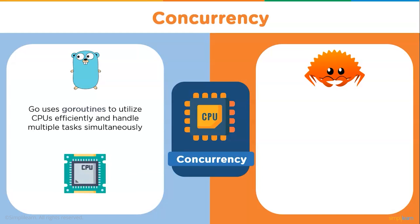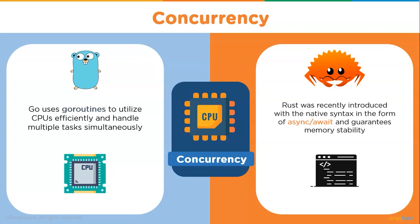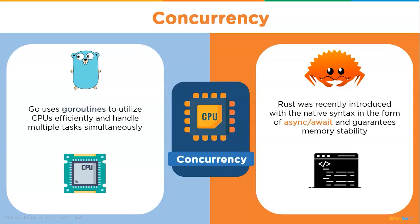From a concurrency perspective, Go was designed to use CPUs efficiently and handle multiple tasks simultaneously, accomplished with the introduction of Go routines. These are lightweight, hold fewer resources, and are executed independently — running concurrently with other functions and eliminating the need to create new threads. On the other hand, Rust was recently introduced with native async/await syntax and guarantees memory stability. Developers prefer Go in the case of concurrency.